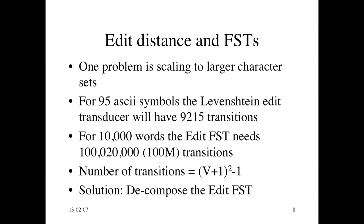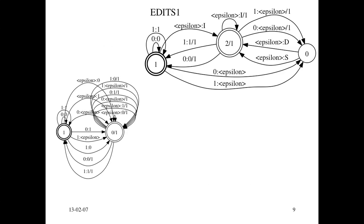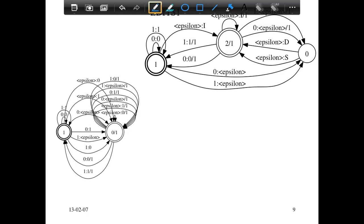And the solution, there's a clever trick to this that exploits composition actually, and is to decompose the edit FST. Basically factor out the substitutions and deletions and insertions in such a way that you don't have to map every symbol to every other symbol. So that might seem contradictory, but it's actually fairly straightforward. So this is what we're starting with. This is the edit FST I just showed you. And we're going to decompose it into two FSTs. The first FST, let's call it edits1.